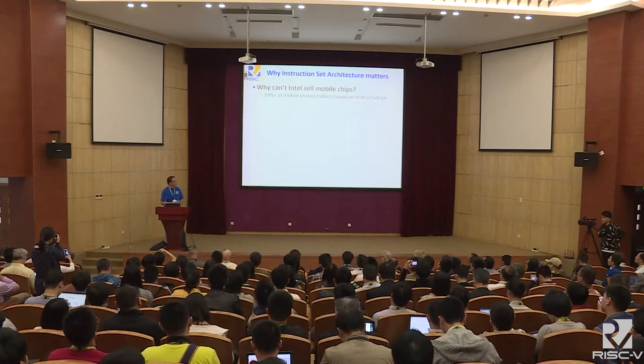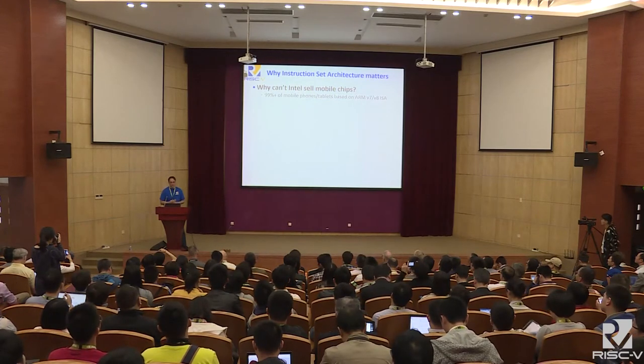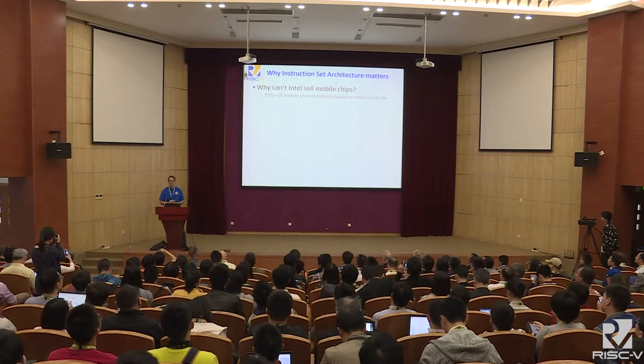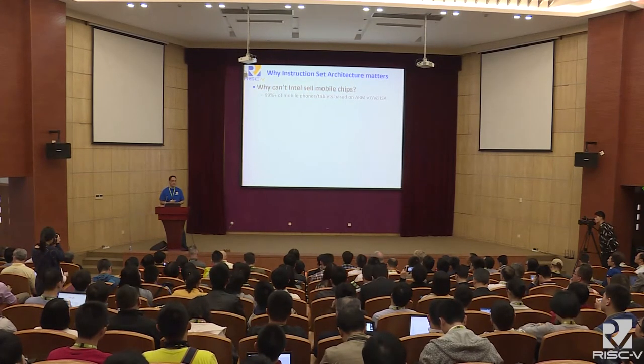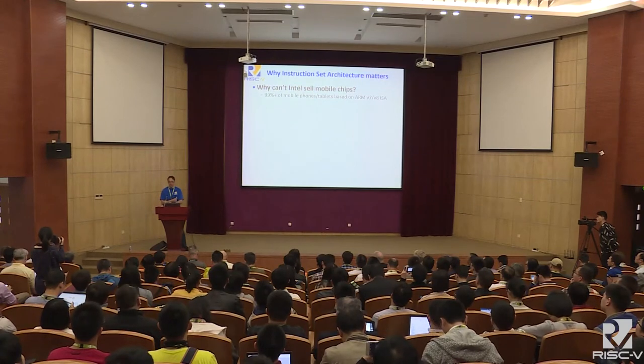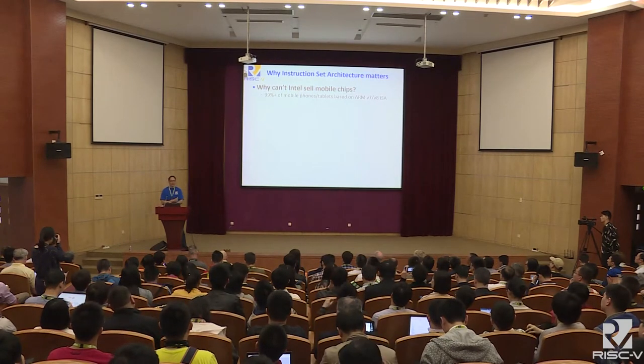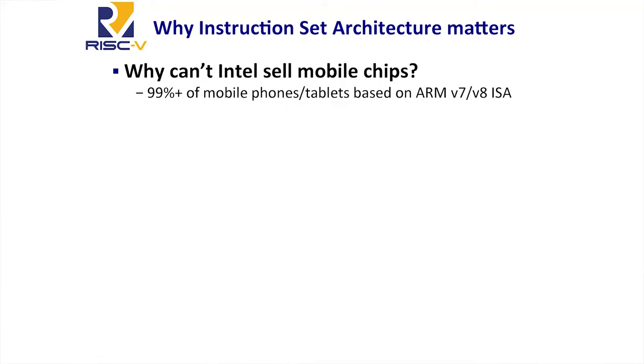Why do instruction sets matter? To many people this is a little detail hidden in the middle of their system — they're writing software and they don't really care about it. But why does it really matter? It really shapes our whole industry. One question I'd like to ask is: why can't Intel sell mobile chips? This is the biggest semiconductor company in the world, but they failed in the mobile market. They have the wrong instruction set. People really don't want x86 in mobiles because all the software runs on ARM.